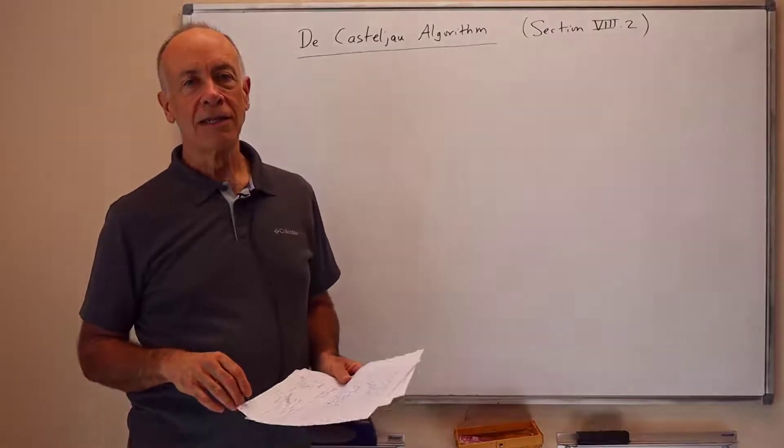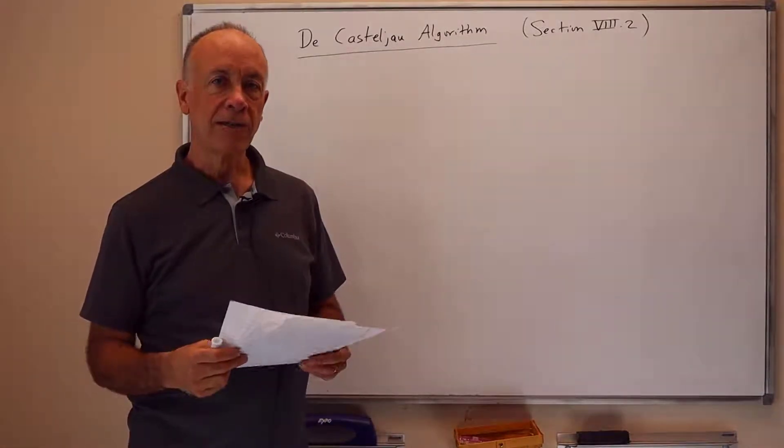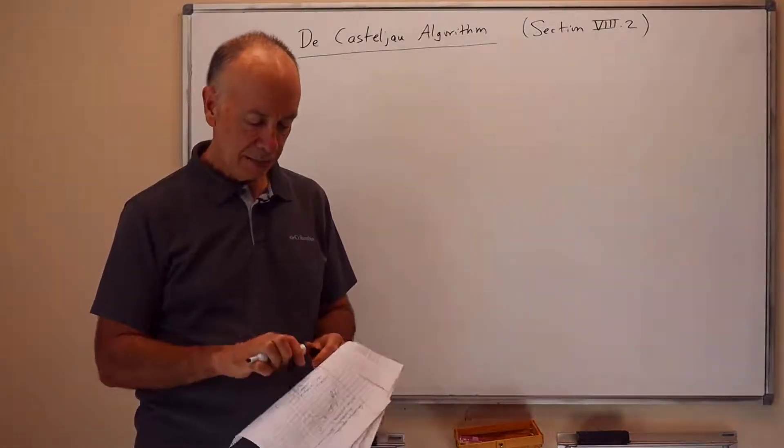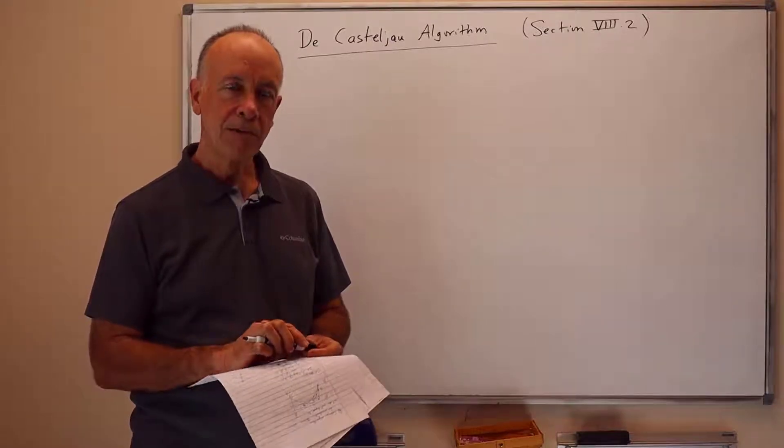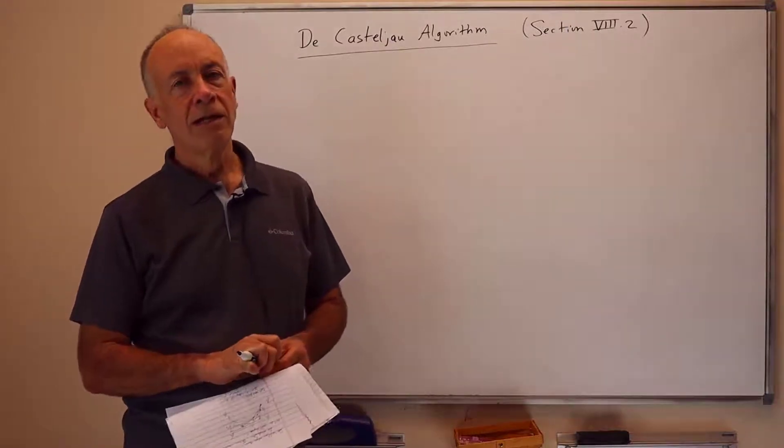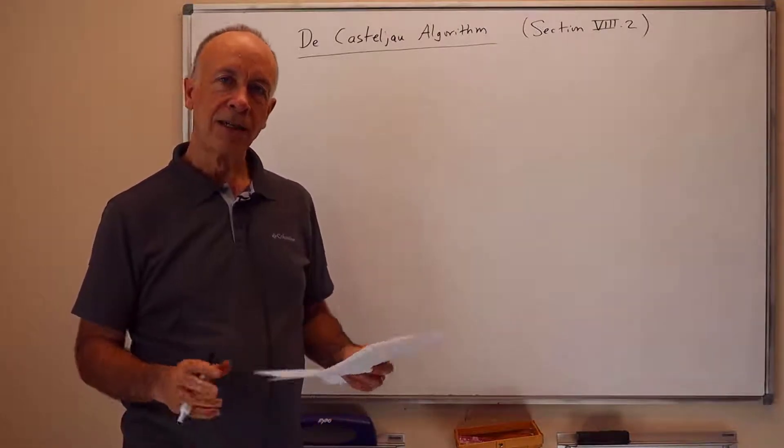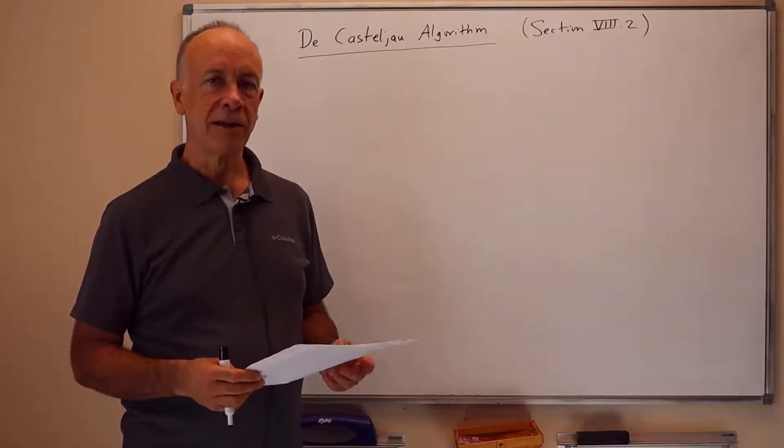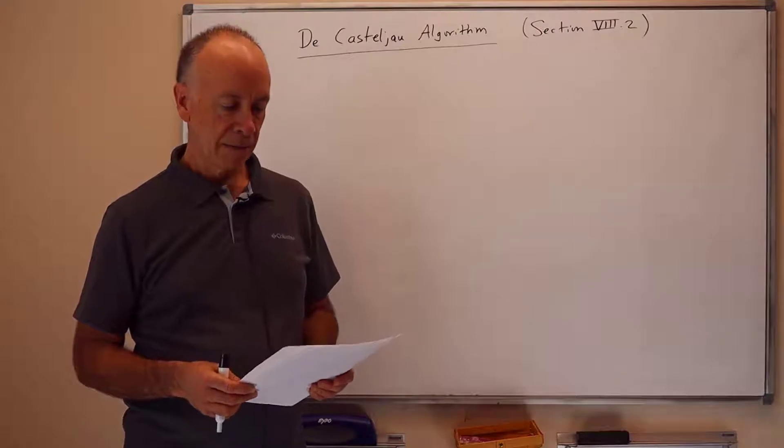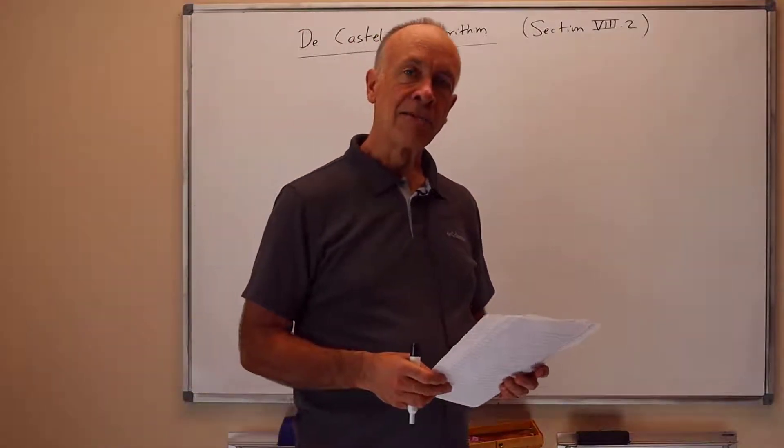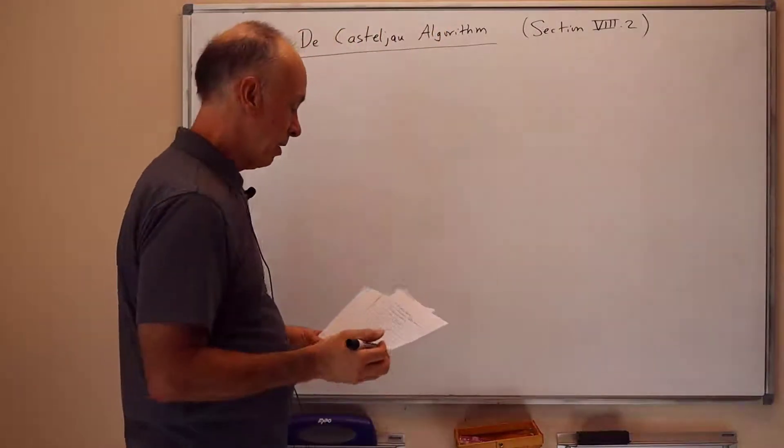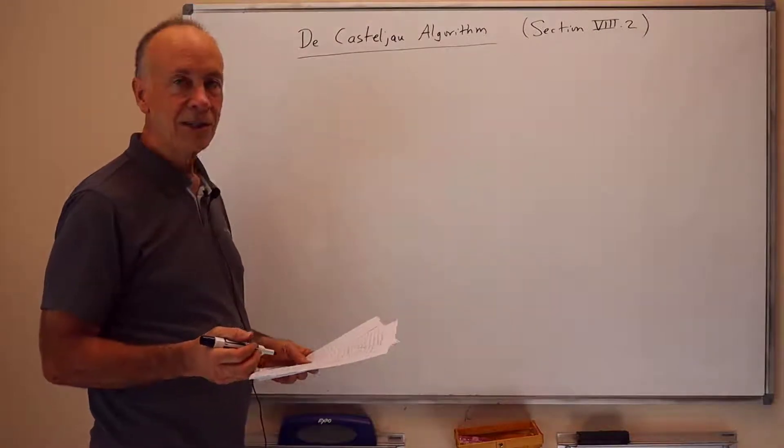Hi, this presentation will cover the DeCasteljau algorithm for evaluating degree 3 Bezier curves. This is a particularly simple method to use both by hand and for computers. It's also computationally quite robust, so you don't have to worry as much with this method as other methods about round-off errors and stability. So let me just launch into the description of the algorithm.